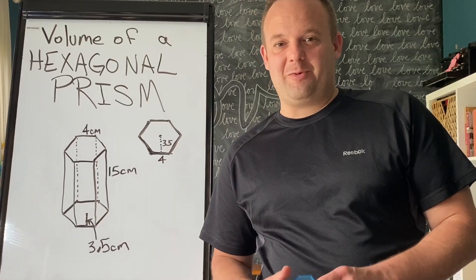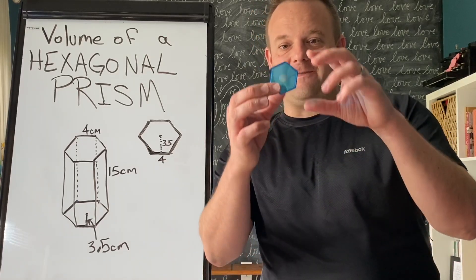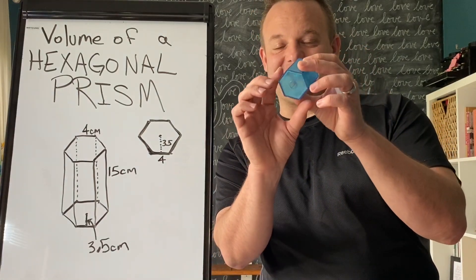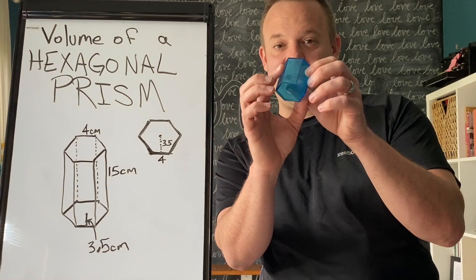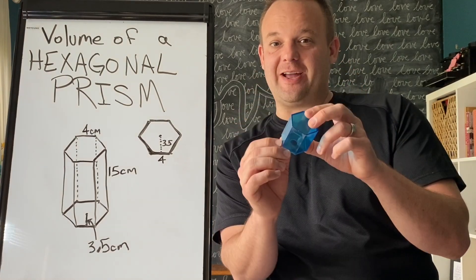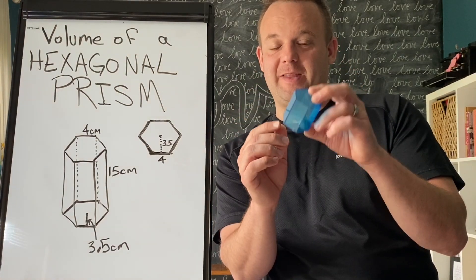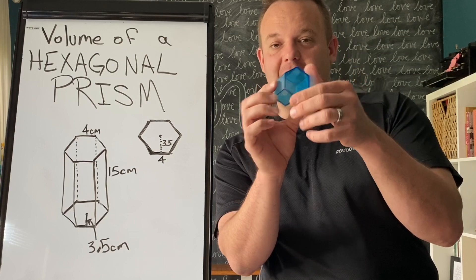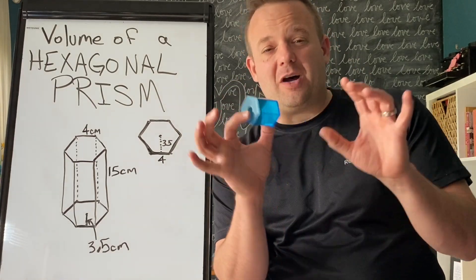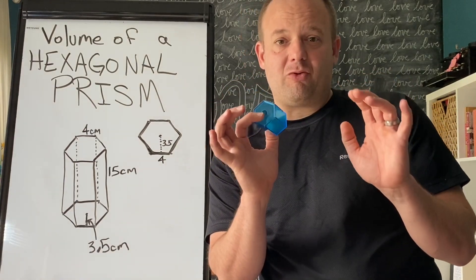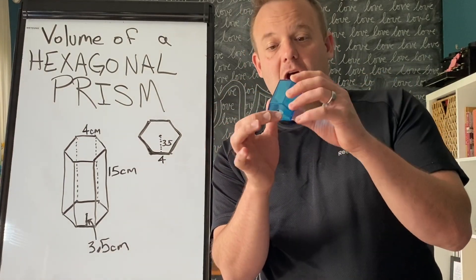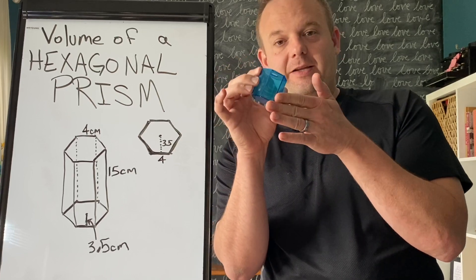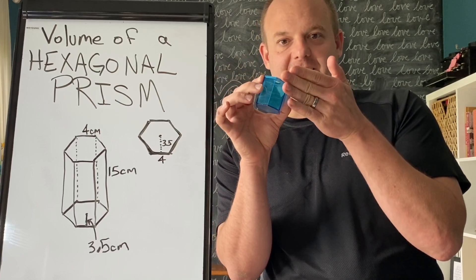Welcome! Today we're going to find the volume of a hexagonal prism. Shout out to Topher. So in order to find the volume of any prism, you have to find the area of the base multiplied by the height.